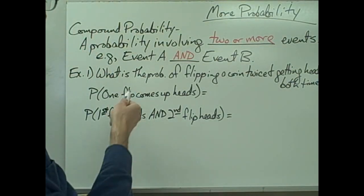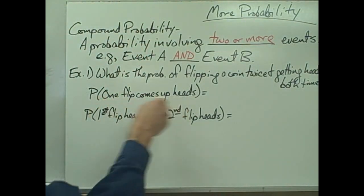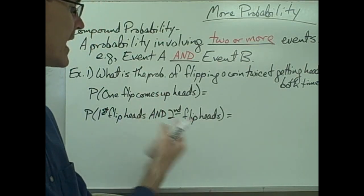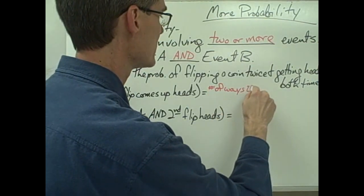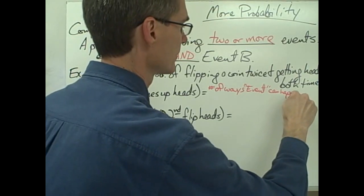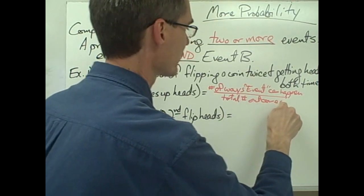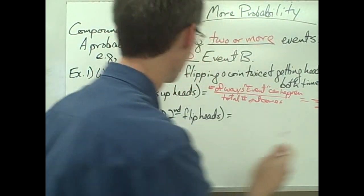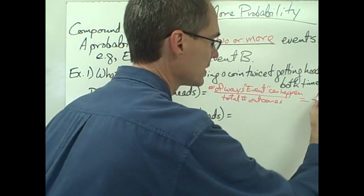Example number one says: what is the probability of flipping a coin twice and having it come up heads both times? We've already talked about flipping a coin once. If we flip a coin one time and want the probability of getting heads, that's just the number of ways the event can happen divided by the total number of outcomes. For a coin flip, there are two possible outcomes — heads or tails — and only one way to get heads, so the probability is one-half.